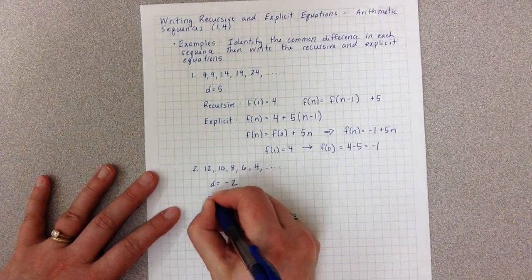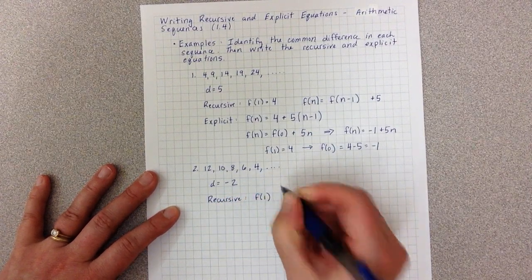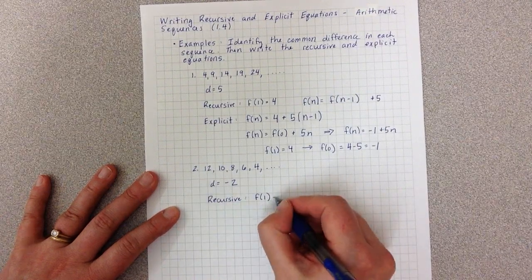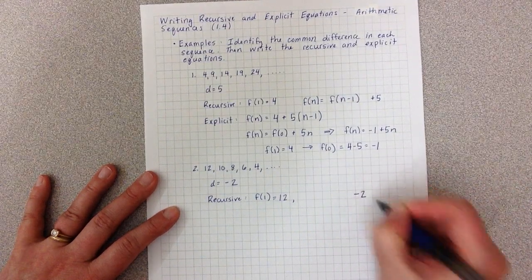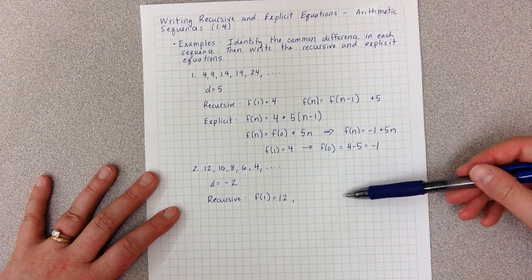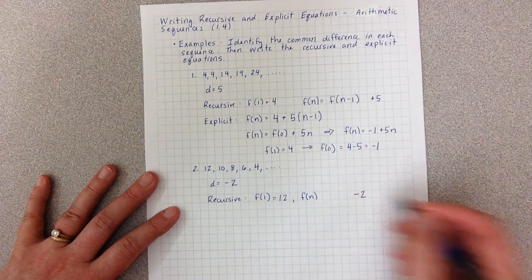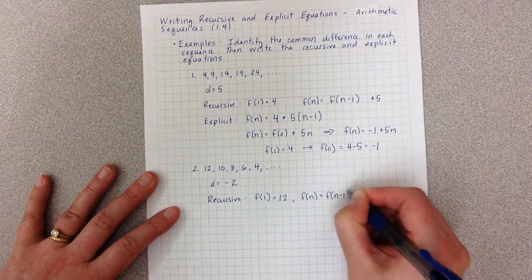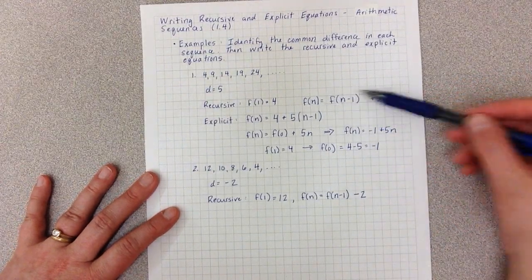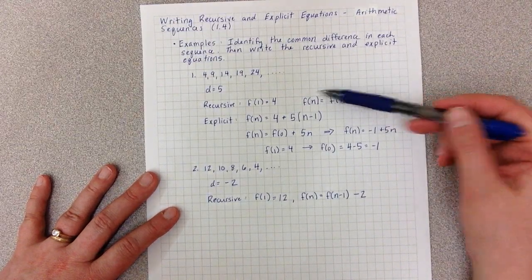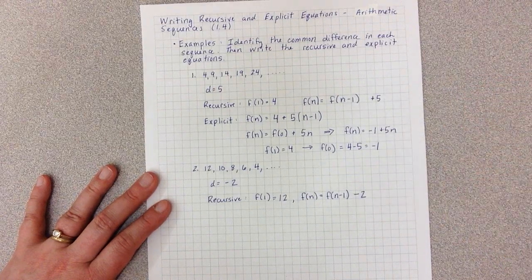So now I can write my recursive. Again, I say where I start - first term F(1) = 12. Then I say what I need to do each time. I'm going to subtract two each time, and the notation is going to be the exact same thing we have above. It is the current term equals the previous term minus two, F(N) = F(N-1) - 2. This piece of the notation doesn't change. The N may change to be another letter or the F may change to be another letter, but this idea of F(N) and F(N-1) will remain the same.